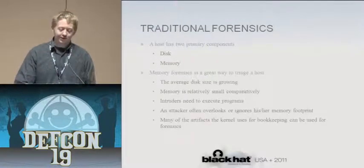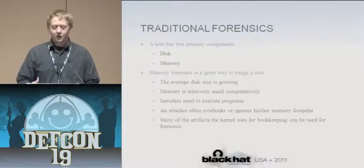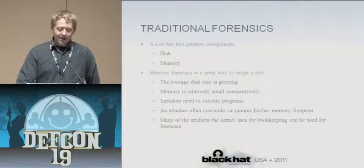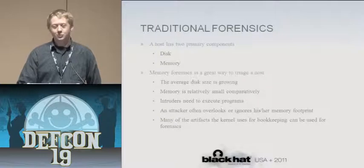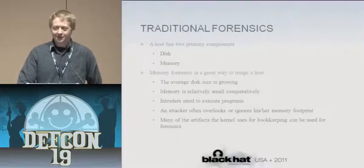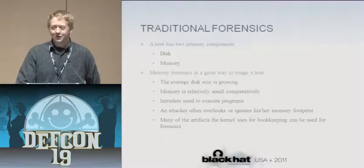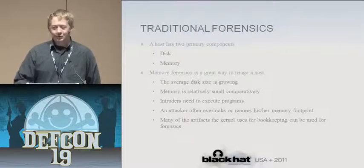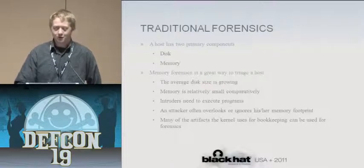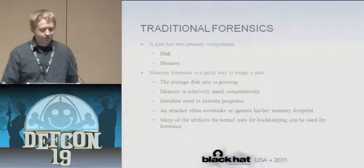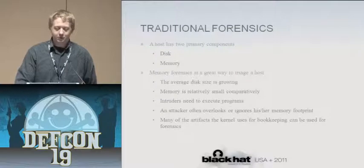Traditional forensics broadly speaking: a host has two large sources of information — disk and memory. Memory has become a great way to triage a host in a forensics investigation. The average disk size is growing extremely high — most hard drives come at least 250 gigabytes — so searching through a full image is a much longer process. Memory can help speed up what you're looking for. It's relatively small comparatively, so you can scan the whole space pretty quickly.